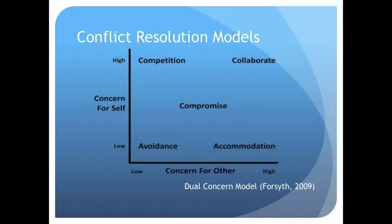Competition occurs when assertiveness is highest and empathy is lowest, utilising personal skills to seek domination over others. Collaboration or cooperation can be used to reach a compromise by considering the interests of oneself and others. Accommodation occurs when an employee gives up his own needs and concerns for others to resolve conflict. Lastly, compromise serves as a combination of these approaches.